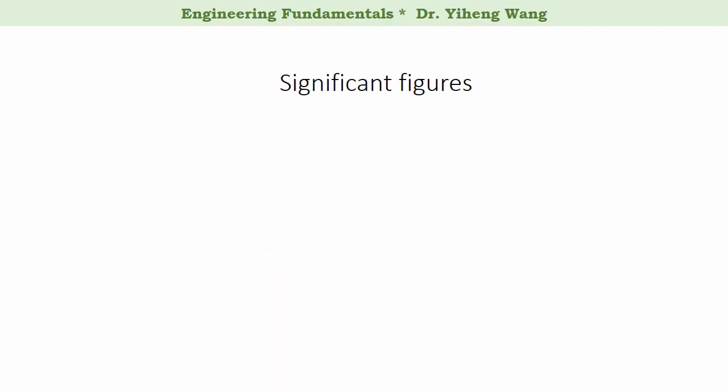So how do we determine if a figure in a number is significant or not? It is actually easier to determine the insignificant figures in a number. The rules are as follows. First, only zeros can be insignificant figures. In other words, if a figure is not zero — if it's 2, or 5, or 8, etc. — then it must be significant. But not all zeros are insignificant.